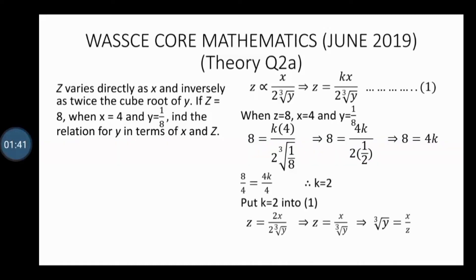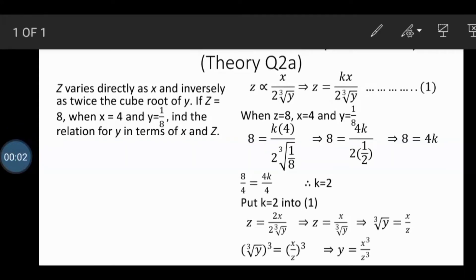This gives us z equals x over the cube root of y. Now, to make y the subject as required by the question, we interchange the positions of z and the cube root of y, giving us the cube root of y equals x over z. We then raise both sides to the power of 3 to eliminate the cube root sign, which gives us y equals x cubed over z cubed.